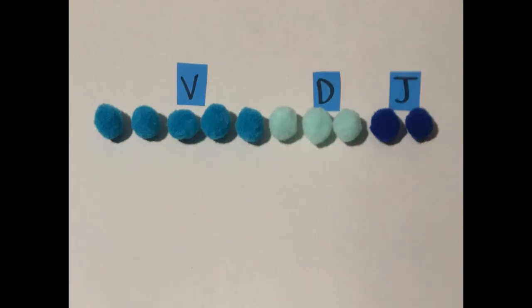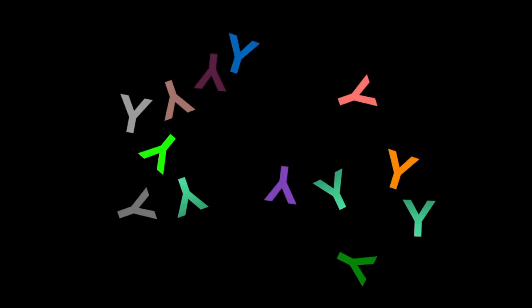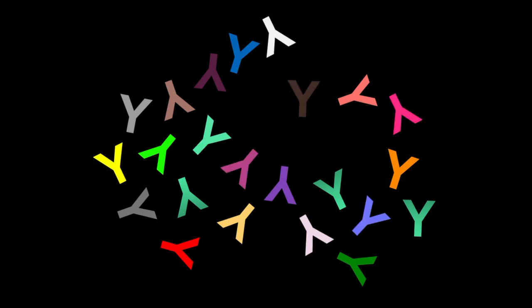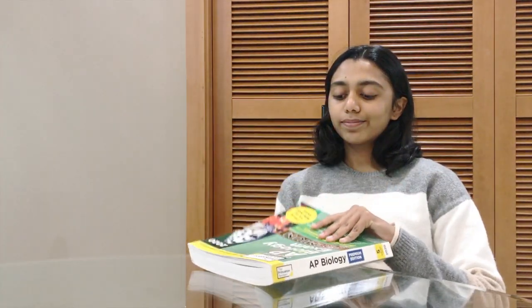DNA is always mutating or changing, which creates even more variety in our antibodies. Ultimately, all those mutations let us make billions of different antibodies. And it's those billions of antibodies that help us fight pretty much any pathogen that enters our body.